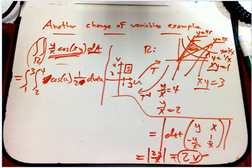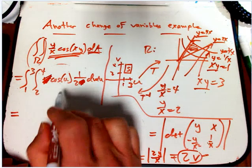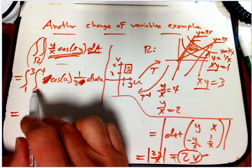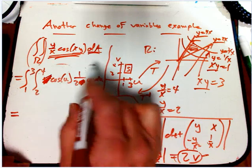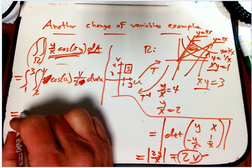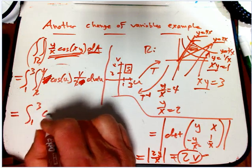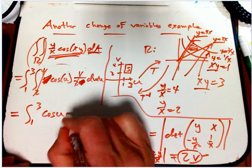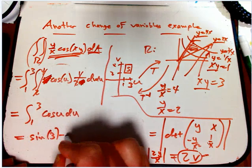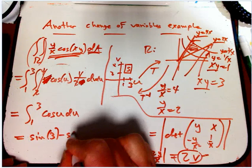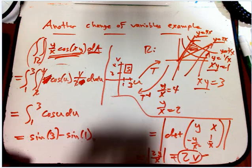And now we've got an incredibly simple integral. The v just integrates out. Integral 2 to 4 dv is 2. Oh, times 1 half. That cancels out. And you just get integral 1 to 3 of cosine u du. Which is sine of 3 minus sine of 1.